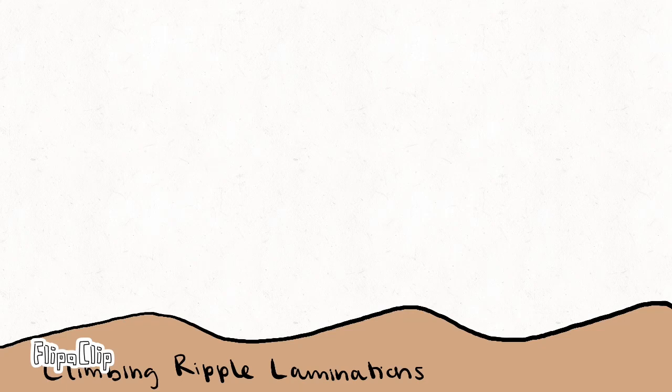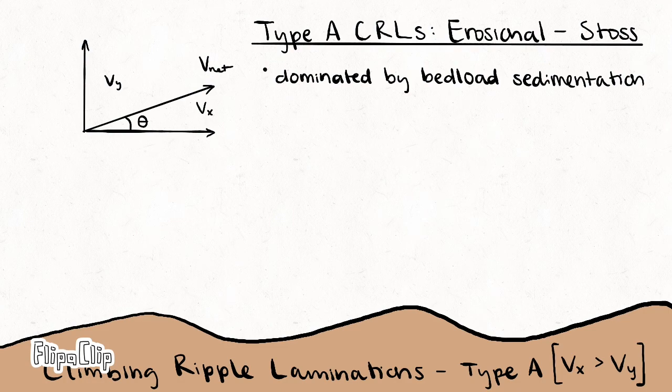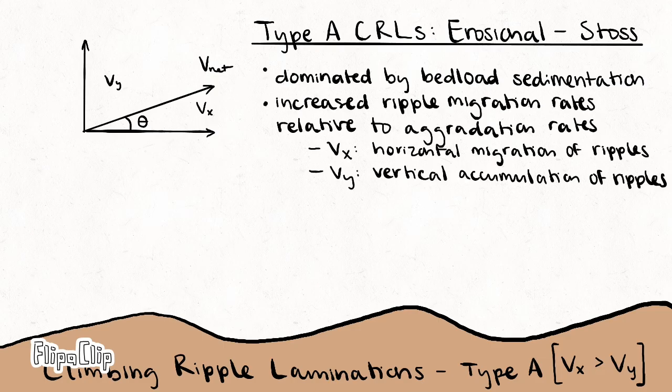In this video, I will be discussing climbing ripple bedforms, of which there are three primary types. Type A, or erosional stoss, are those dominated by bedload sedimentation, where V sub X, the horizontal migration rate, is greater than V sub Y, the vertical aggregation rate.